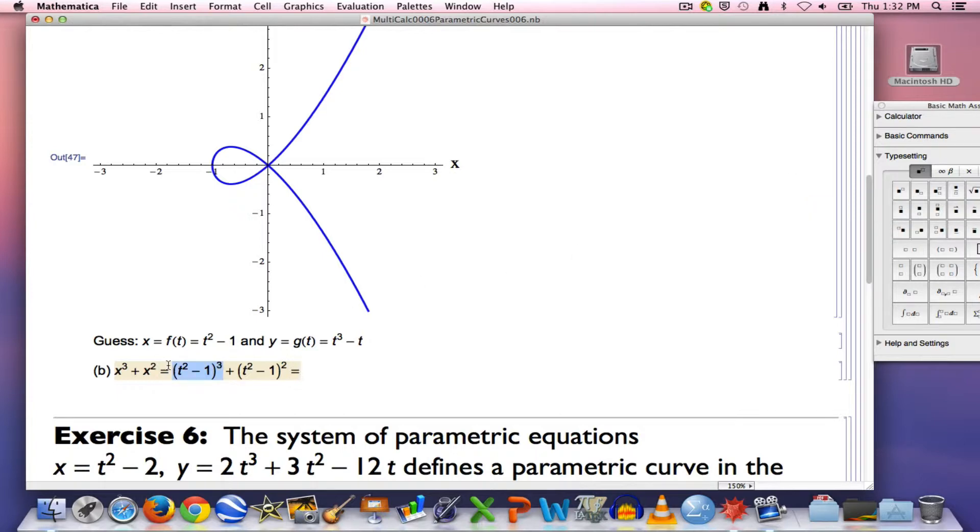Now we need to simplify, expand this out either with Pascal's triangle or the binomial theorem. What you should get if you do that is t to the sixth minus three t to the fourth plus three t squared minus one. Next square this thing out with the FOIL method if you like. Get plus t to the fourth minus two t squared plus one. This can be simplified to t to the sixth minus two t to the fourth plus t squared and then the plus one and the minus one cancel.